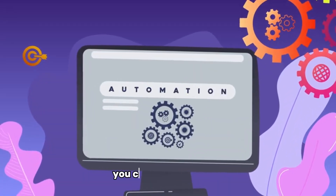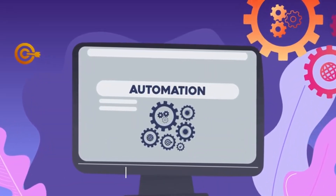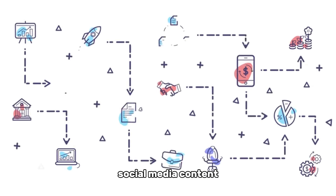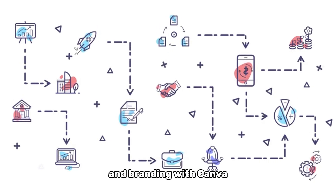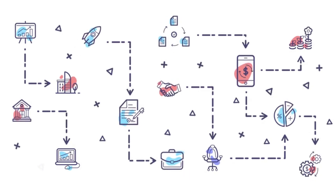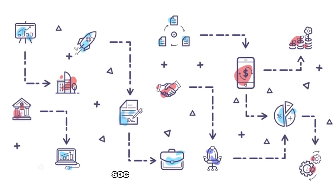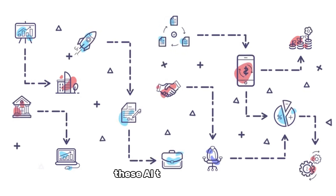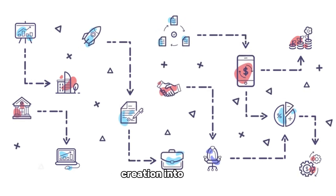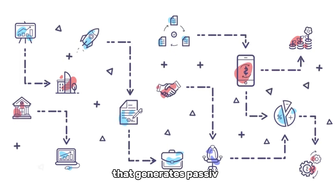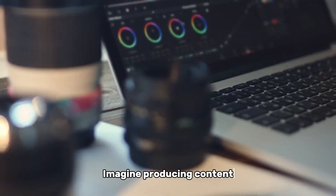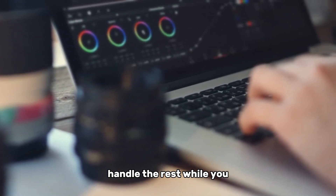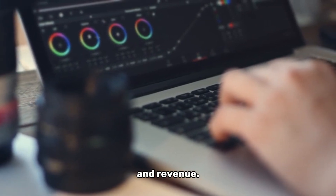To recap, here's how you can automate your content creation side hustle with AI: Use Jasper AI to write your blog posts, scripts, and social media content. Design stunning visuals and branding with Canva AI. Create and edit professional videos using Pictory AI. Schedule and manage your social media posts with Ocoya. Boost your SEO and monetize your content with Surfer SEO. With these AI tools, you can easily turn content creation into a fully automated side hustle that generates passive income. Imagine producing content in hours instead of days and then letting the tools handle the rest while you focus on growing your brand and revenue.